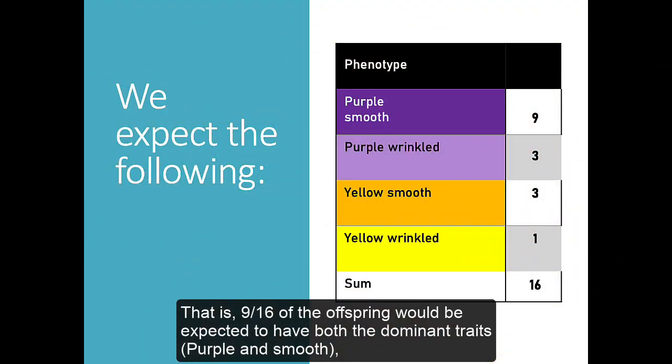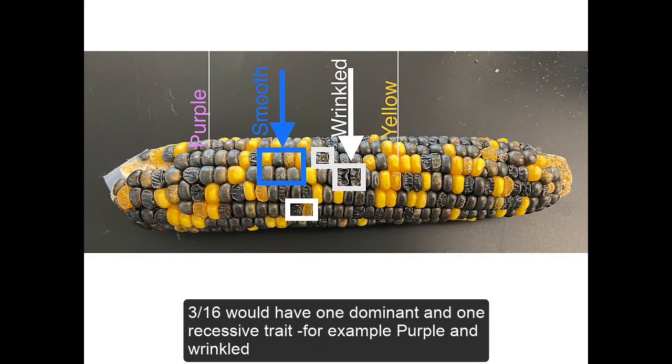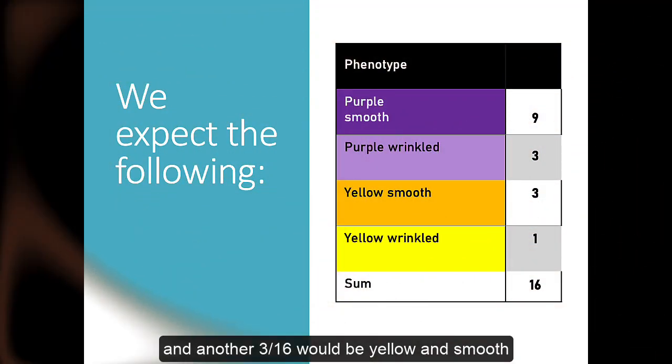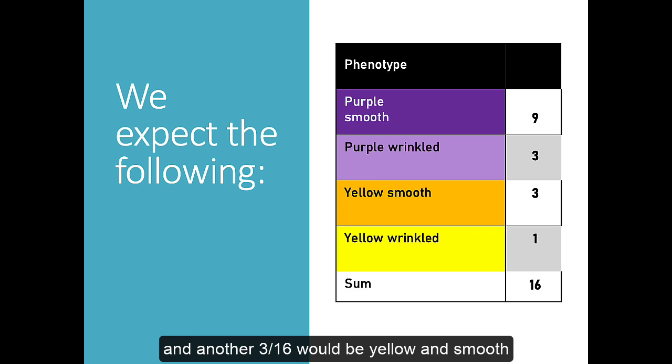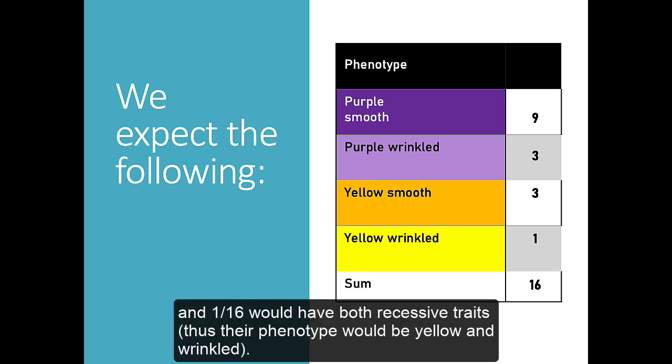That is, 9/16ths of the offspring would be expected to have both the dominant traits, purple and smooth, 3/16ths would have one dominant and one recessive trait, for example purple and wrinkled, and another 3/16ths would be yellow and smooth, and 1/16th would have both recessive traits, thus their phenotype would be yellow and wrinkled.